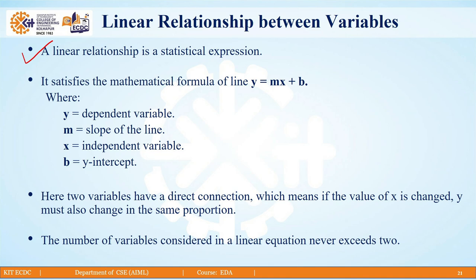This concept satisfies the mathematical formula of a line, which is y = mx + b. In this formula we have two variables: the x variable, called the independent variable, which forms the x-axis of our graph, and the y variable, called the dependent variable, because it is dependent on x. Then we have m, which is the slope of the line, and b, which is called the y-intercept.